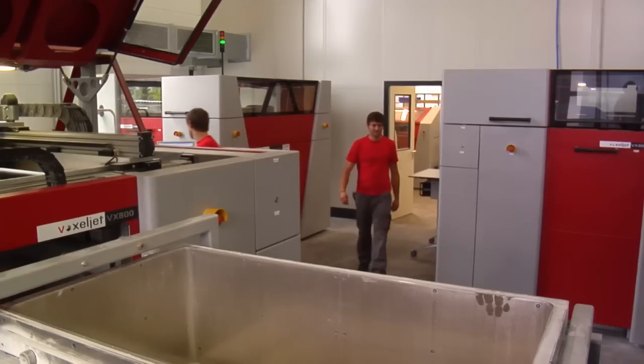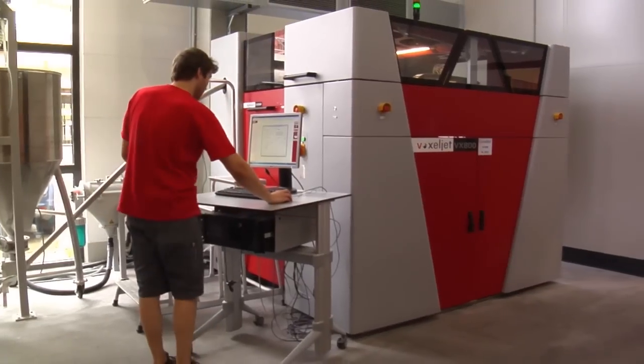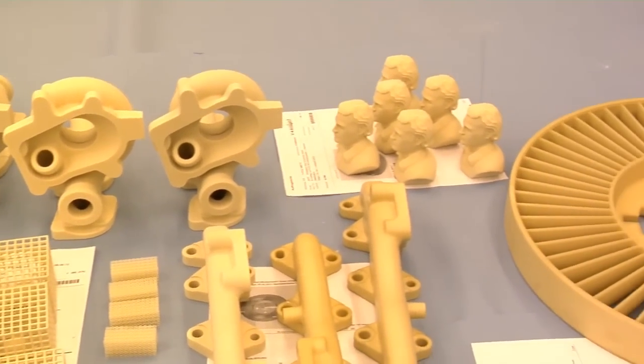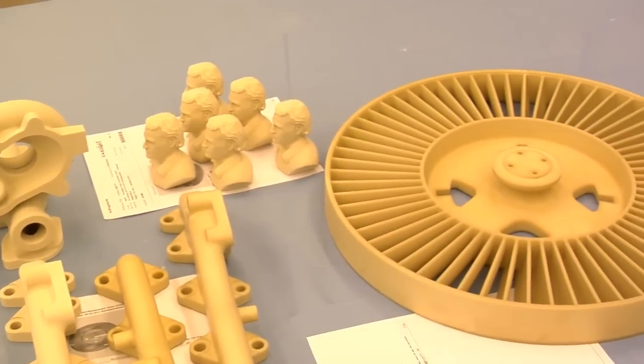VoxelJet can manufacture complex plastic parts using a 3D printing process. It consists of a powder-based process that can be used to create investment casting and illustrative models, measuring up to 1,060 x 600 x 500 mm.